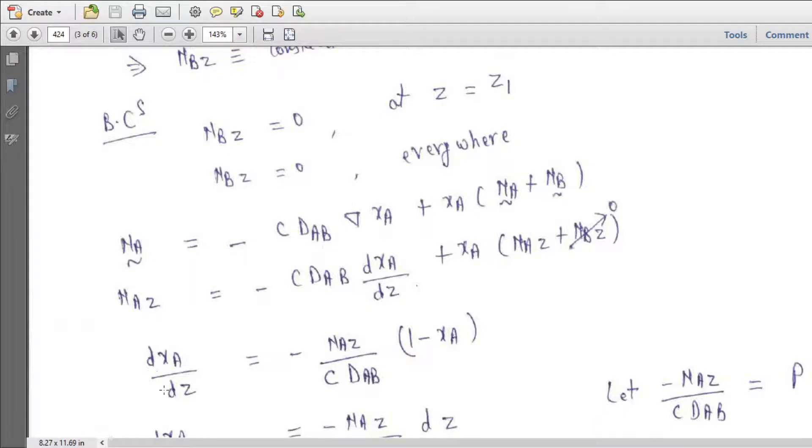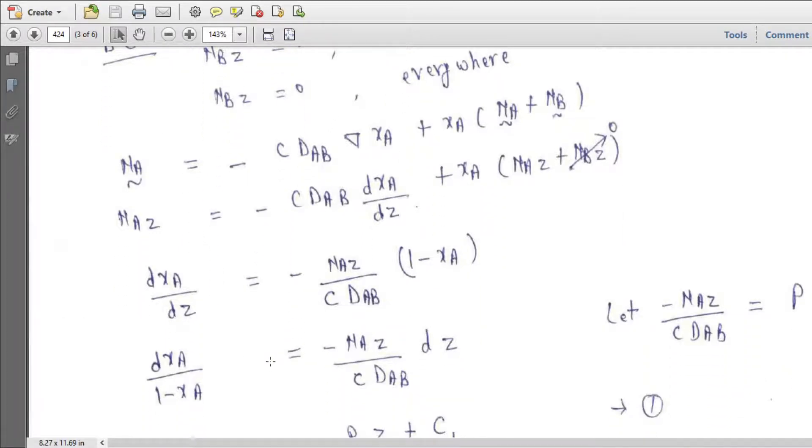So finally you will get d XA upon d Z equal to minus NAZ over C DAB times 1 minus XA. So this would be calculated here. So this you can bring it to this side, and then let's see that minus NAZ over C DAB is equal to P, because this you have to write many times, so we have assumed that P actually.